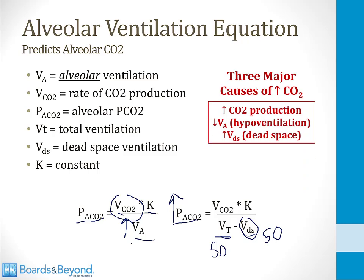There are only three causes of CO2 increase, all evident from the alveolar ventilation equation: increased carbon dioxide production, decreased alveolar ventilation (hypoventilation), or increased dead space. These are the only reasons hypercapnia can develop. The middle one — hypoventilation — is most important. Increasing ventilatory rate can offset both increased CO2 production (as in exercise) and increased dead space. Understanding this is essential for answering hypercapnia questions on Step 1.